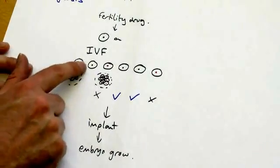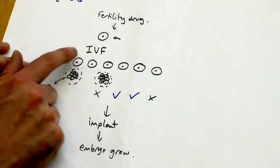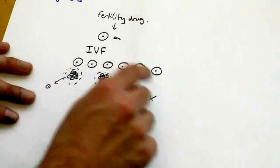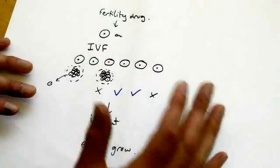So PGD involves a little bit of IVF, test tube babies, but the key point is that we test those embryos before they're allowed to implant. That way we can select, do healthy embryo selection.